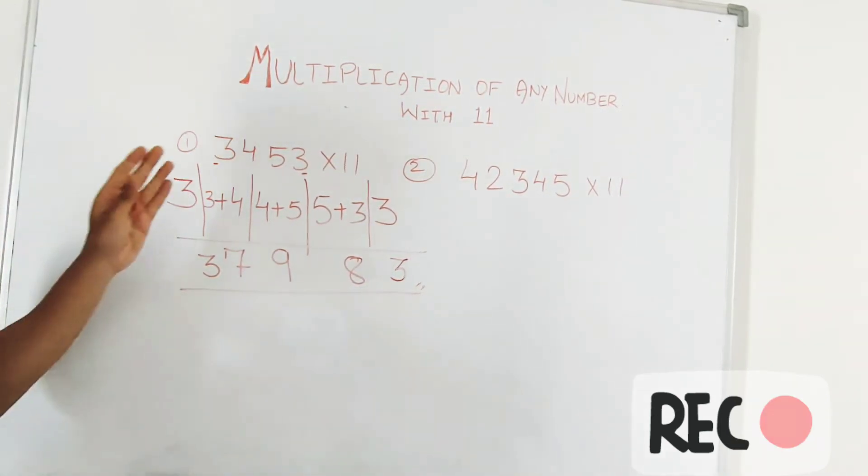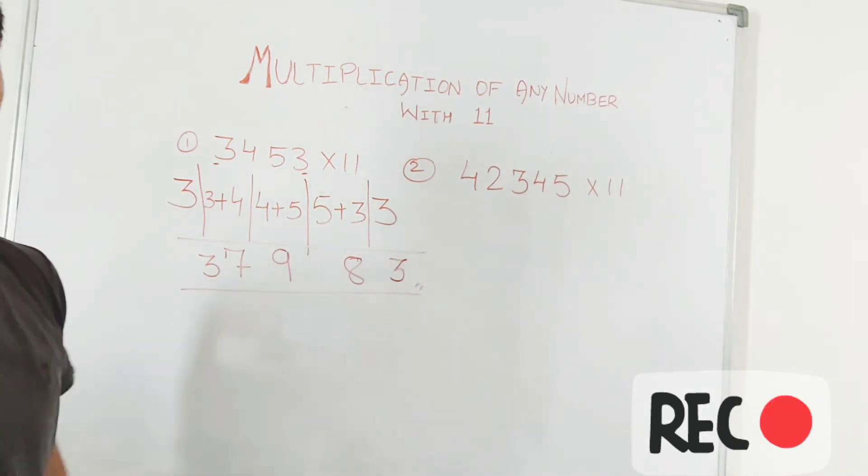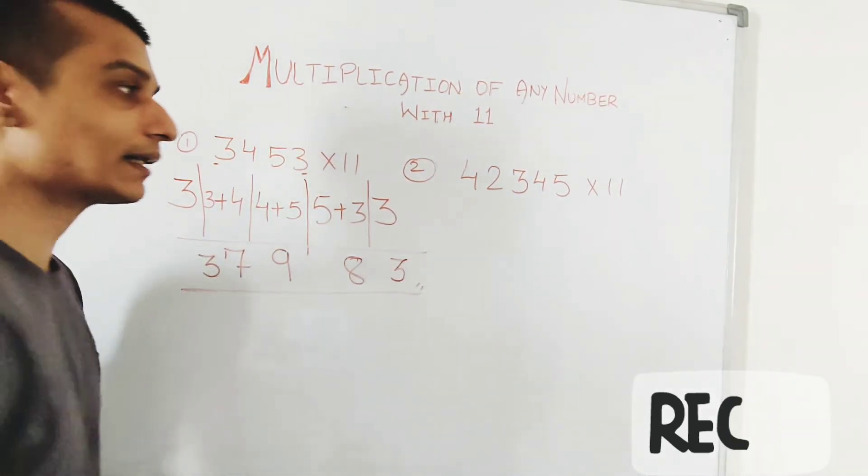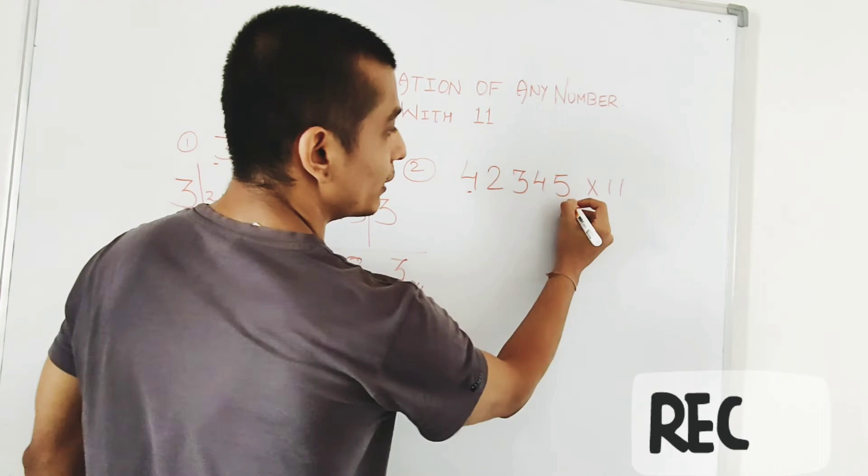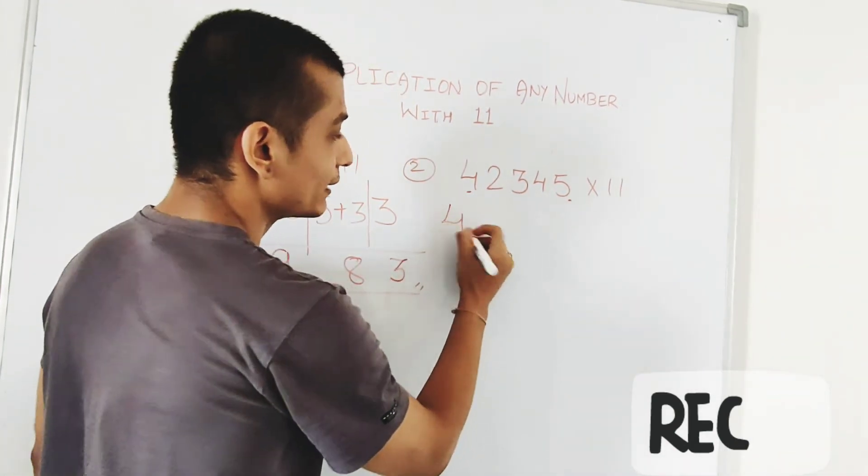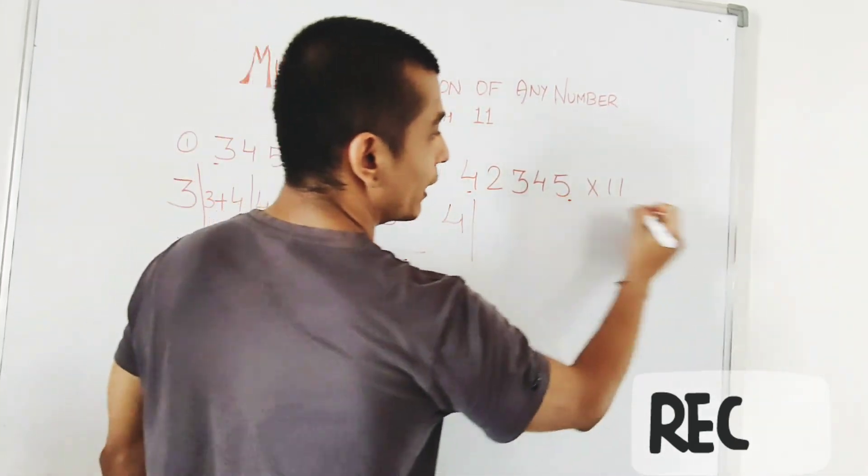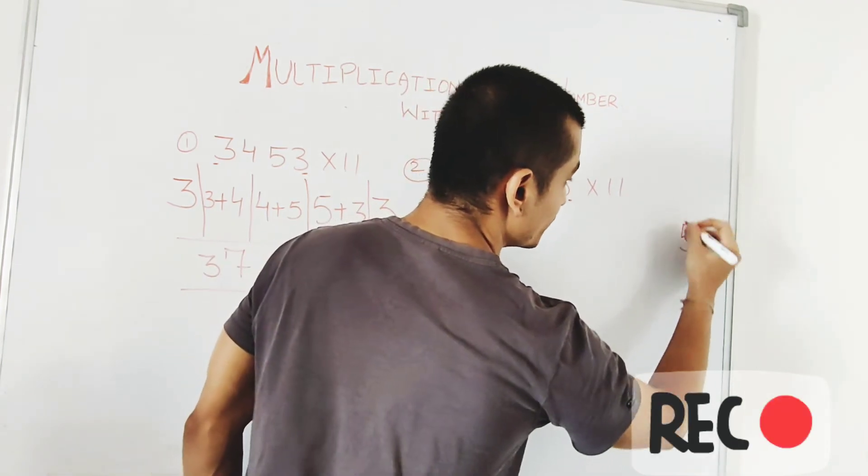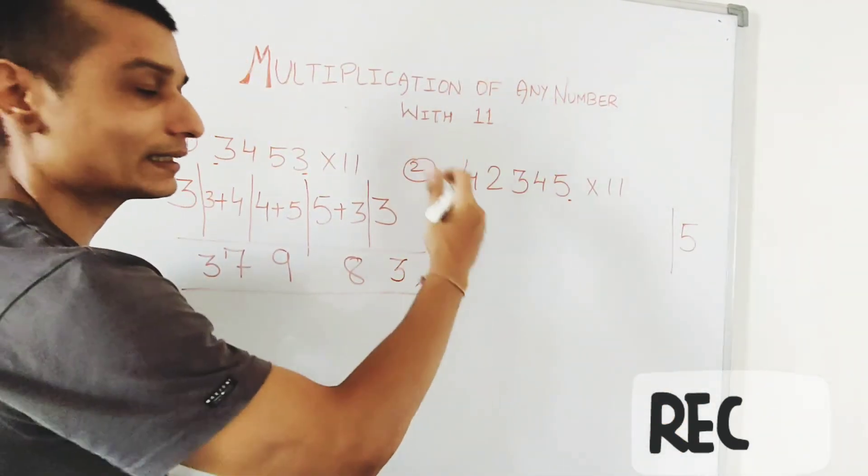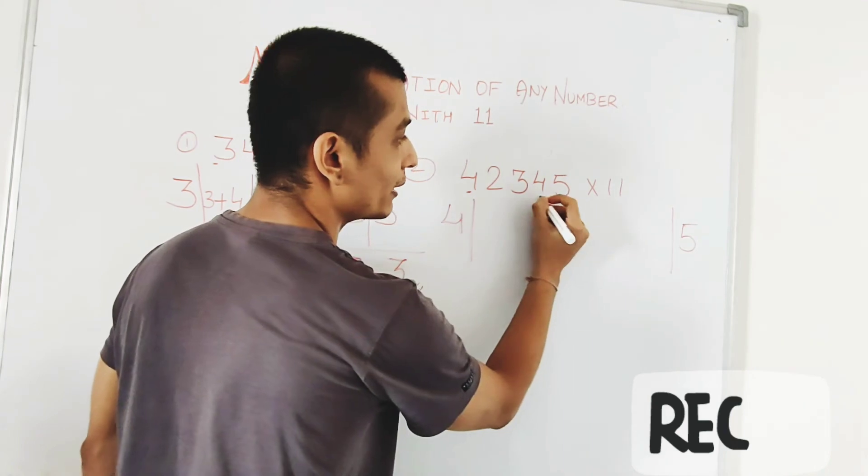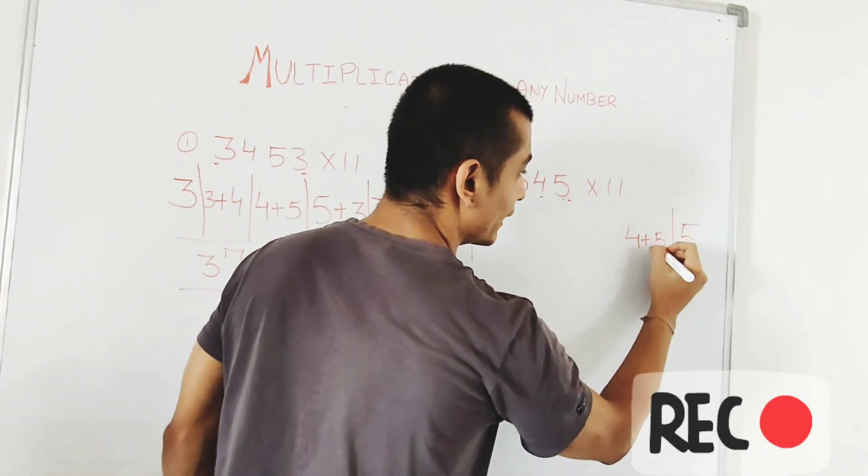Let us see the other example. First I have four, last I have five. Then I have three, then I have four. So here I have five. Okay, now right hand side start. So first we get four and five, so four plus five, then...